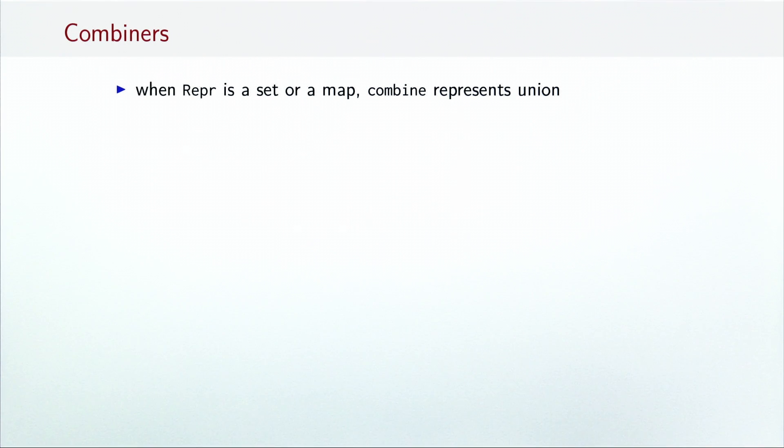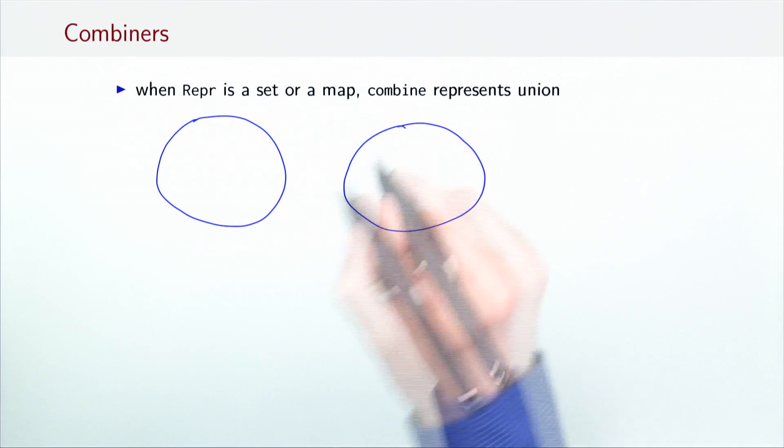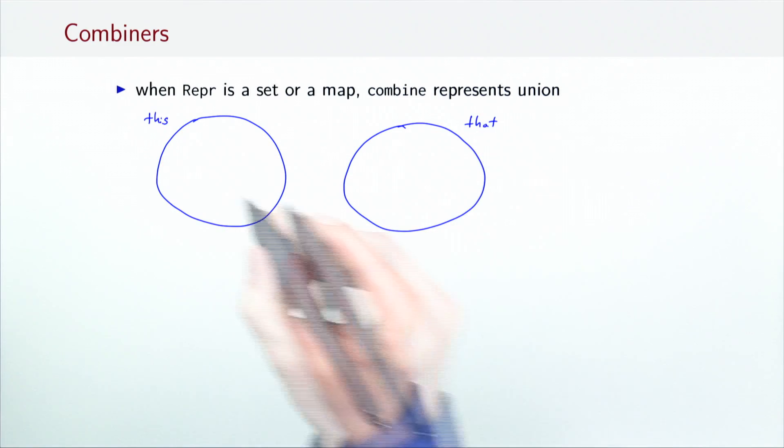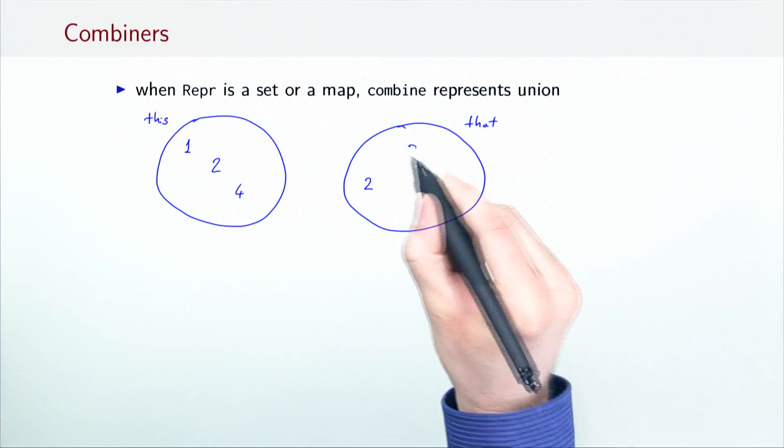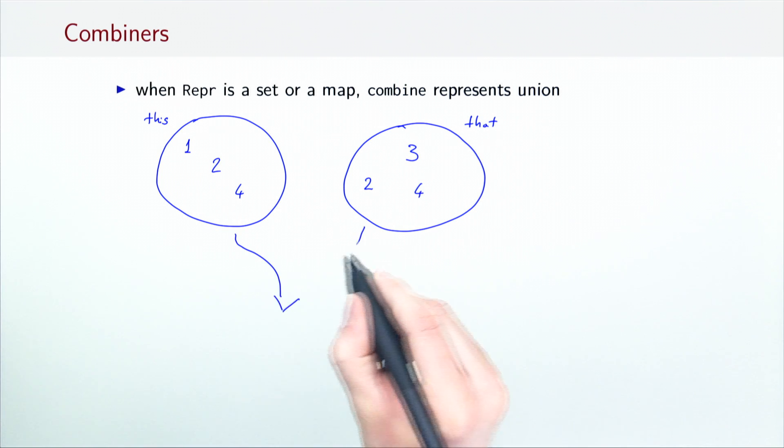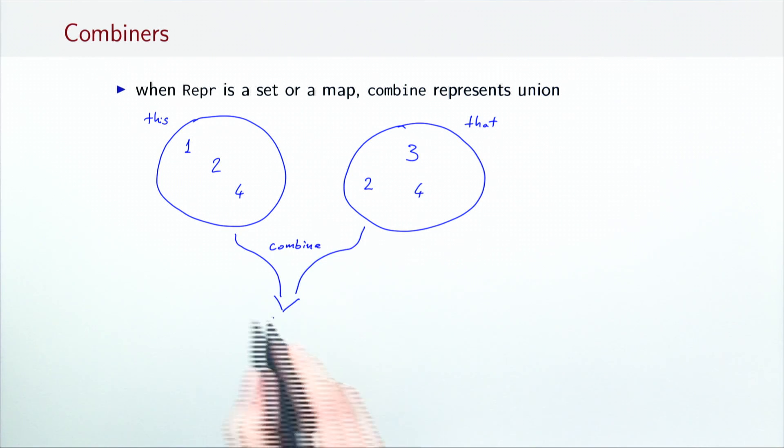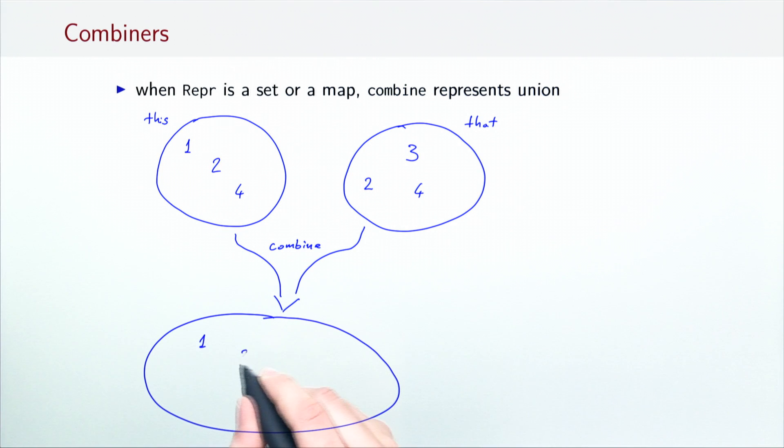The collection wrapper could be a Scala set or a Scala map. In this case, the combine operation represents a union. So, given two sets, this with elements 1, 2 and 4, and that with elements 2, 3 and 4, combine produces a union with elements 1, 2, 3 and 4.